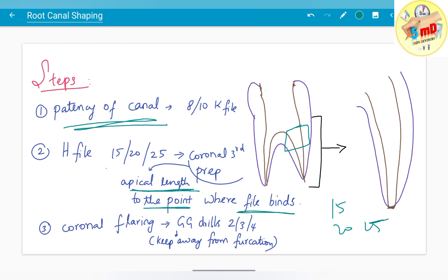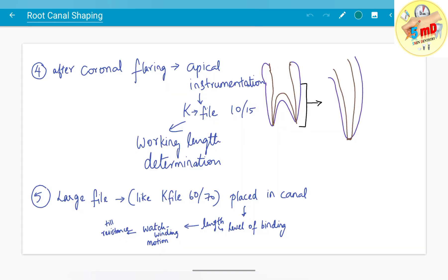The coronal third is prepared only till where the file binds, not the full working length. After this, coronal flaring is carried out with Gates Glidden size 2, 3, or 4, keeping away from furcation. Apical instrumentation is with minimum size 10 or 15 K file. Working length determination is done at this stage after coronal flaring. Then large file sizes like 60 or 70 K file are placed in the canal till resistance.